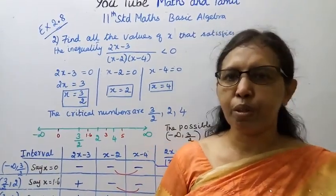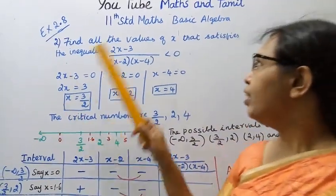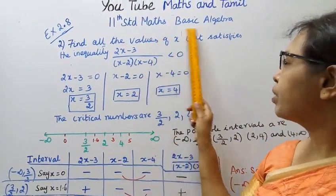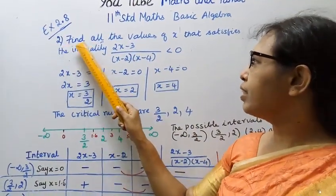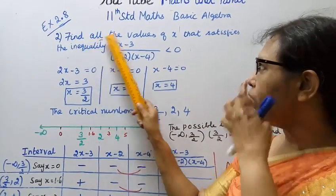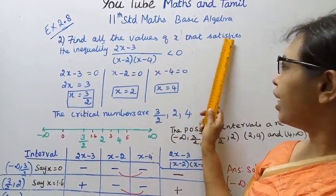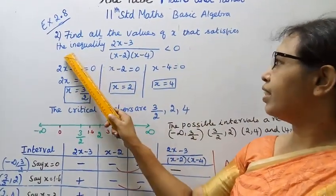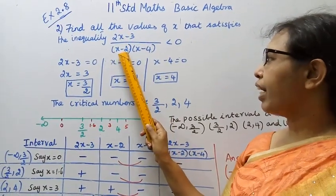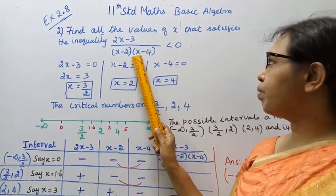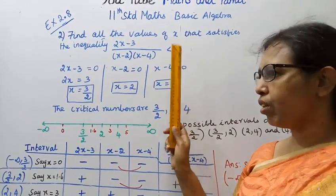Hello students, welcome to Maths and Tamil Channel. Levinster Maths Basic Algebra, Exercise 2.8, Second Sum: find all the values of x such that it satisfies the inequality (2x-3) / (x-2)(x-4) less than 0.